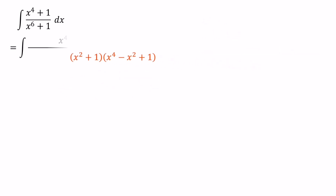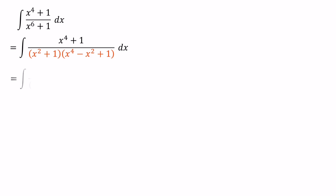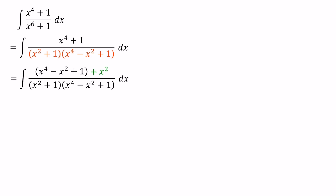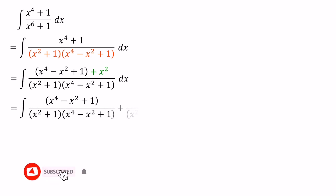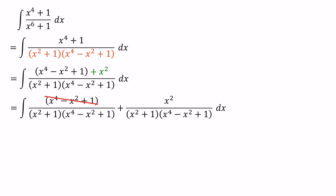Now we need to express the numerator value x to the power of 4 plus 1 in terms of the denominator values. We can write x to the power of 4 plus 1 as x to the power of 4 minus x squared plus 1, and to cancel out the minus x squared term, we add plus x squared. After that, we can divide these numerator values by the denominator value, and cancel out x to the power of 4 minus x squared plus 1 in both numerator and denominator.